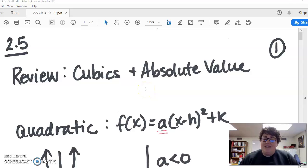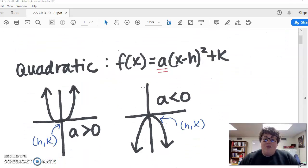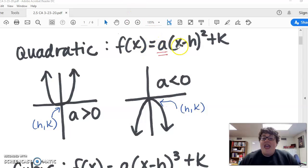First, let's start with a review. The Friday before spring break we talked about quadratics. With quadratics, the A determines whether it opens up or down. We have the inside of the function, which is H, and the outside of the function, which is K. The vertex is at (H, K).